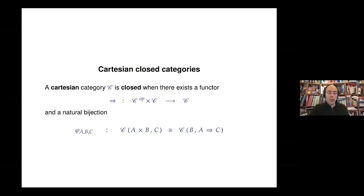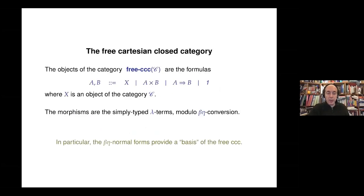A typical example: every topos is cartesian closed, every category of sheaves is such, and there are many other examples. Here I want to focus on the free construction.